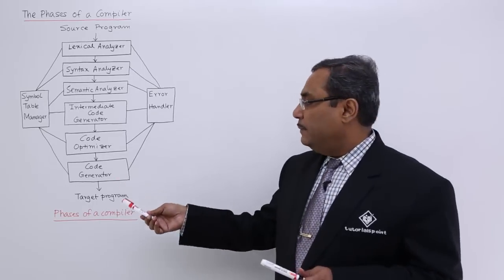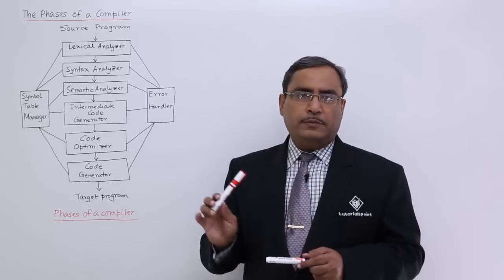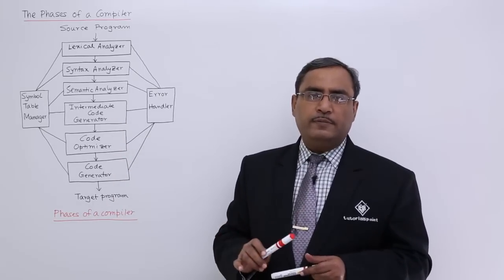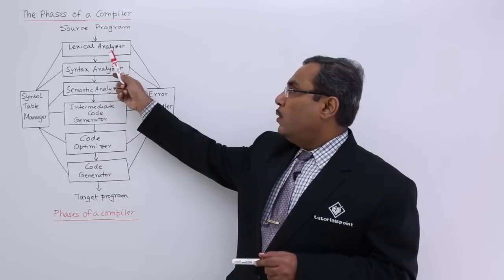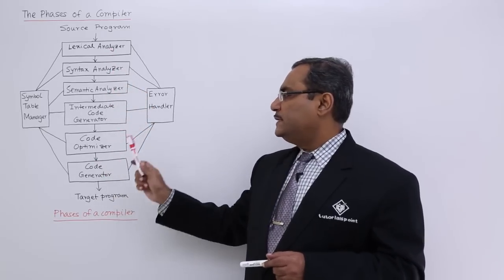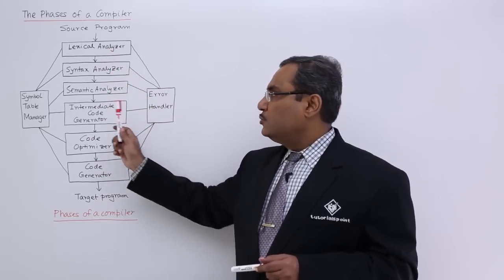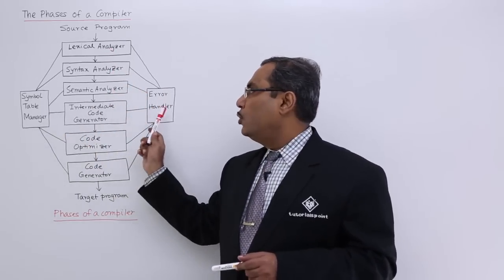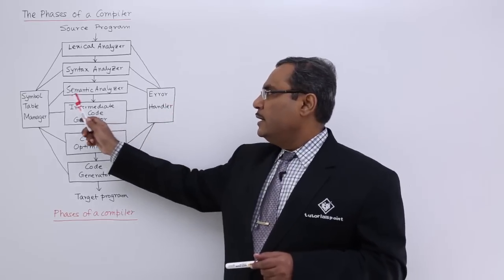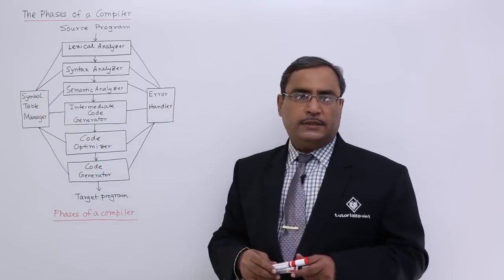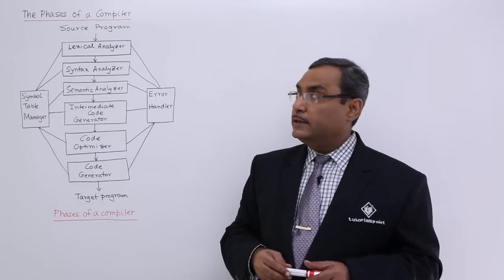The phases of a compiler can be depicted using this famous diagram. Here we are having 6 phases and there are two other supporting modules. One is the error handler and another one is the symbol table manager. Let me discuss one after another.